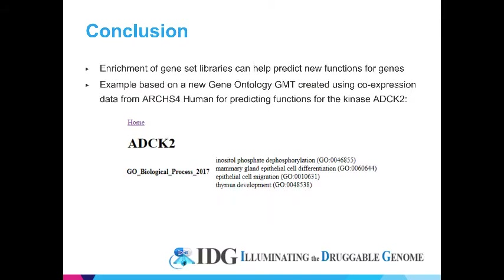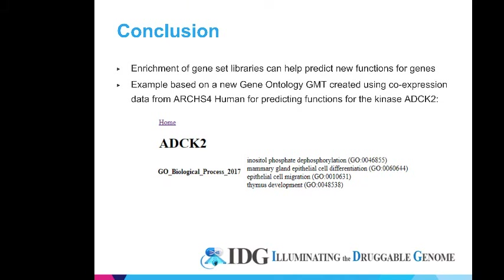What can we do with this? The NIH's Illuminating the Druggable Genome Program has a list of kinases, ion channel, and G protein-coupled receptor proteins of particular interest because of their susceptibility to drugs and their association with human disease. One of these kinases, ADCK2, is currently on many databases with its function being unclear. The new functions predicted using this method suggest that ADCK2 may have an unappreciated role in breast cancer. We can use this method to predict new functions for these proteins of interest and hopefully make progress in associating drugs with certain diseases.